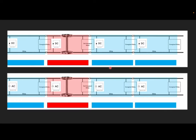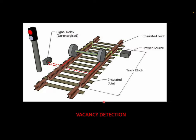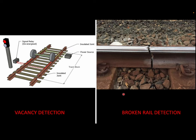In very simple terms, DC track circuits mean you have a DC source connected to the relays, and in AC track circuits you have an alternating current source connected to the relays. AC track circuits have more nuances, but we won't get into that in this video because this is about coded track circuits. One of the basic functions of AC and DC track circuits is vacancy detection.